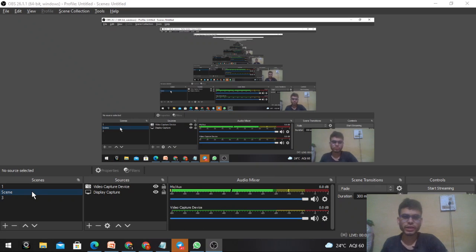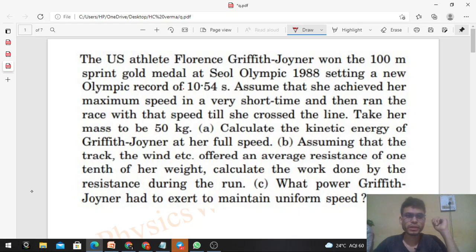Okay, hi everyone. Today let's discuss this interesting problem. It says the U.S. athlete Florence Griffith Joyner won the 100 meter sprint gold medal at Seoul Olympic 1988, setting a new Olympic record of 10.54 seconds. Assuming that she achieved her maximum speed in a very short time and then ran the race with that speed till she crossed the line, take her mass to be 50 kilogram.